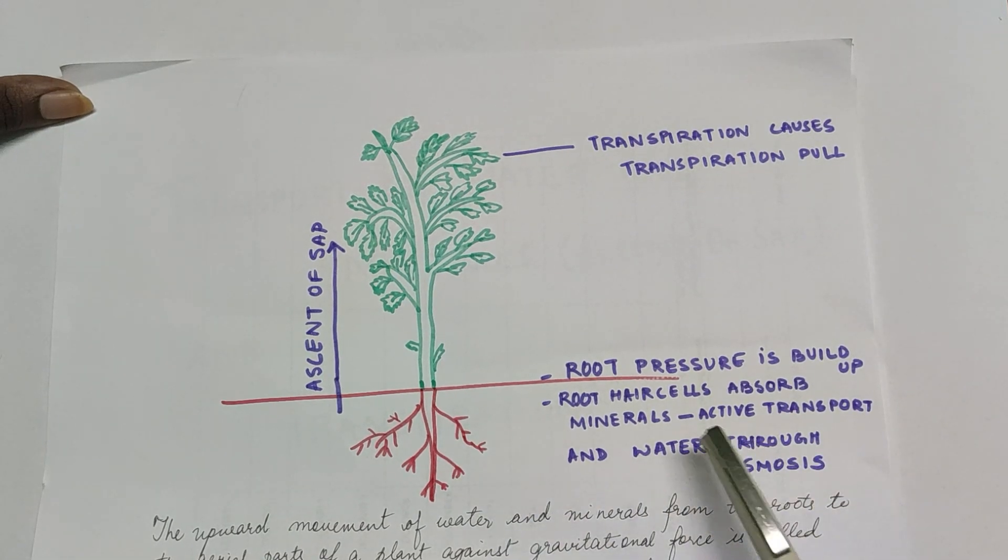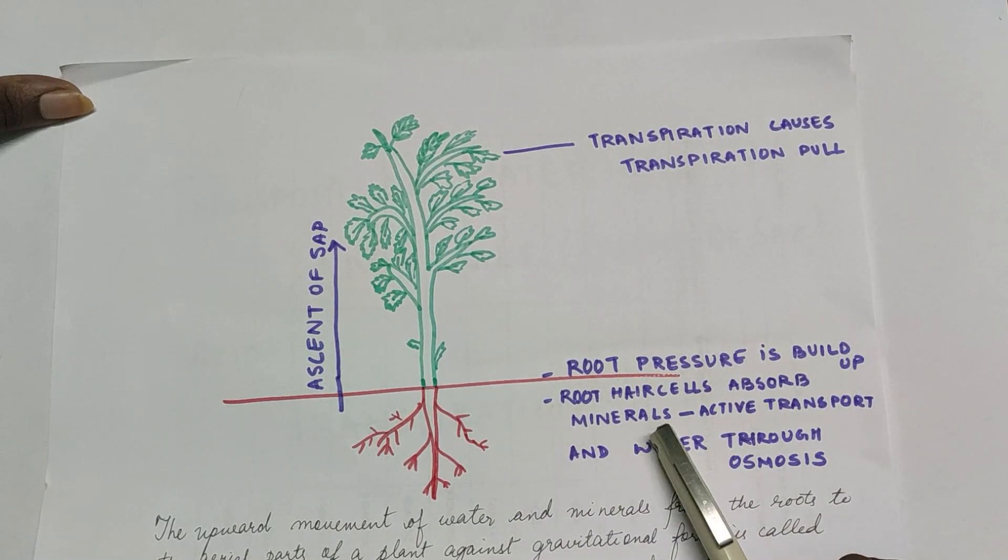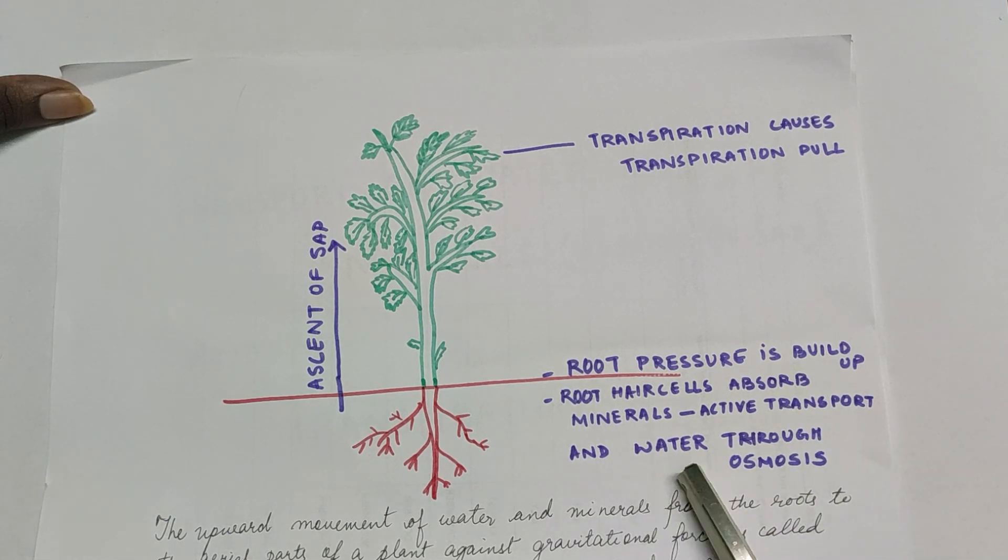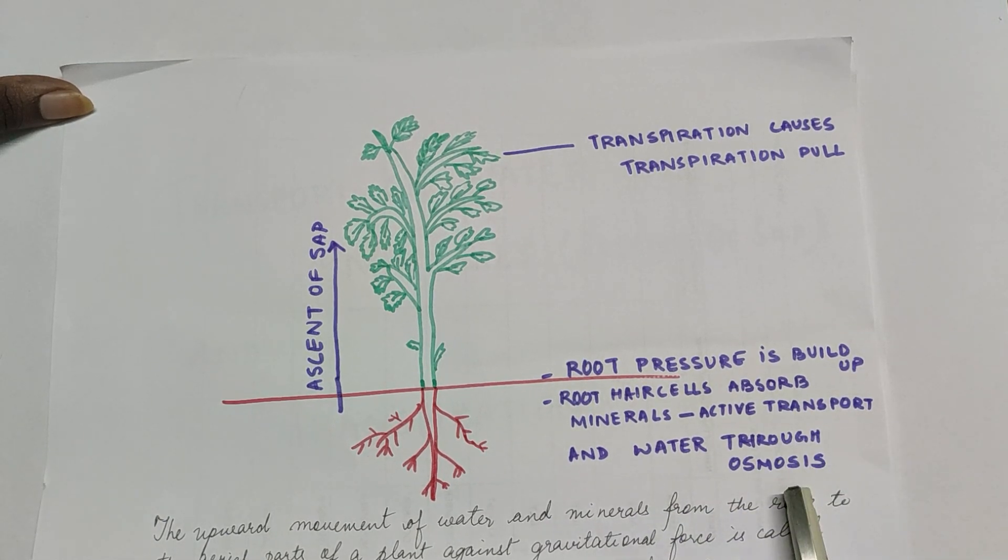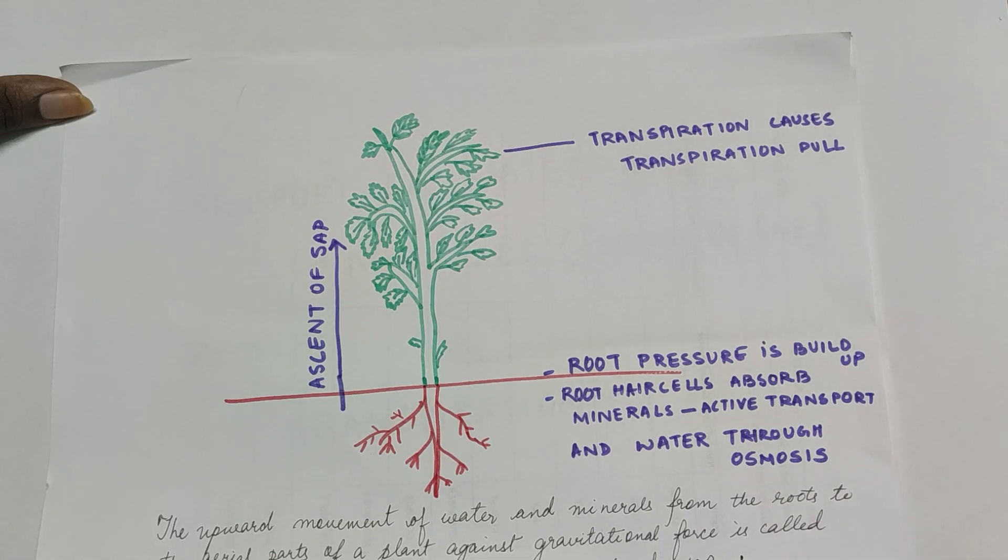They absorb water and minerals through the method of active transport and absorb water also through the process of osmosis. Then what is happening in the plant is already the plant root is having mineral, still it will absorb more mineral because of active transport.